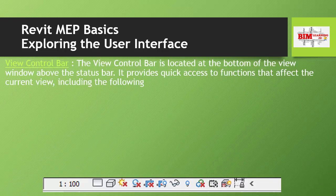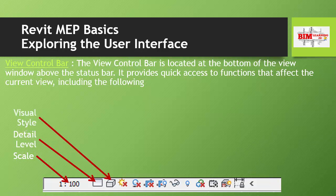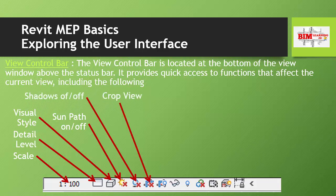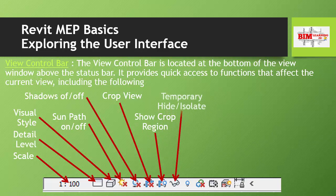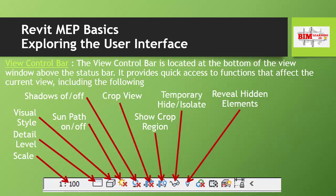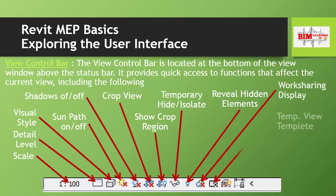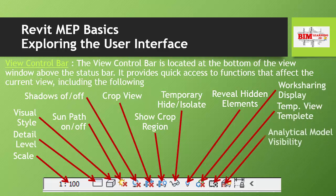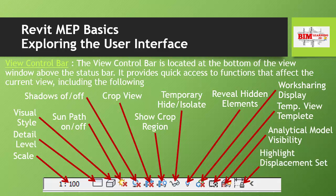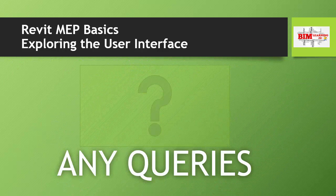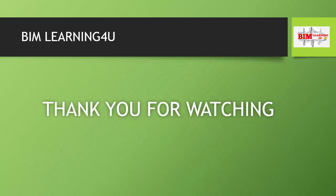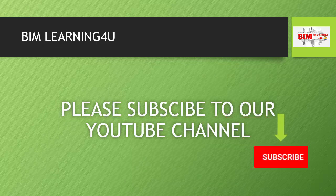The View Control Bar is located at the bottom of the view window, above the Status Bar. It provides quick access to functions that affect the current view, including: Scale, Detail Level, Visual Style, Sun Path on/off, Shadows on/off, Crop View, Show Crop Region, Temporary Hide or Isolate, Reveal Hidden Elements, Worksharing Display, Temporary View Template, Analytical Model Visibility, and Highlight Displacement Set. If you have any questions, please comment below. Thank you for watching — please subscribe to our YouTube channel.